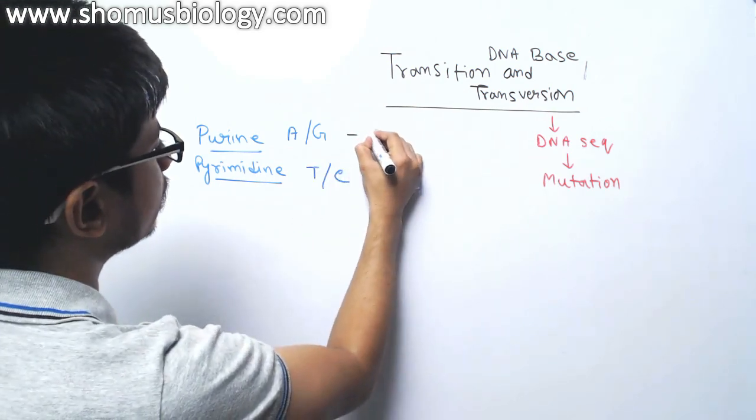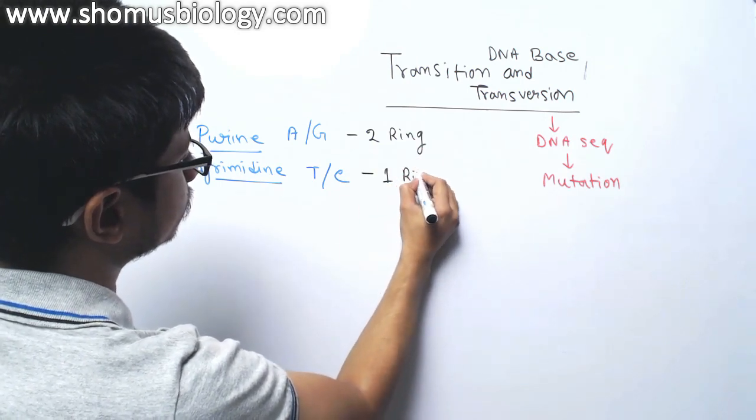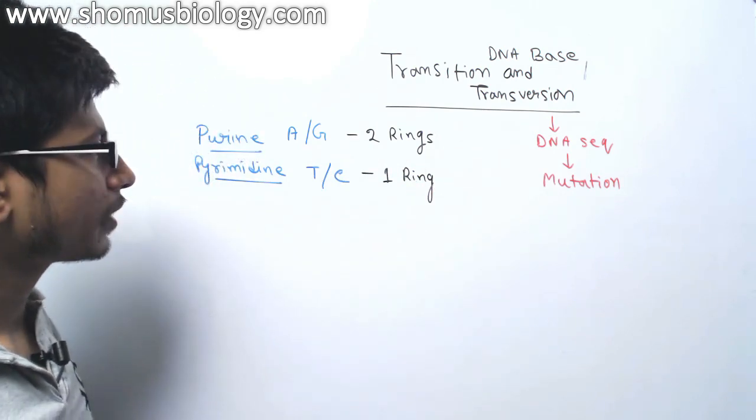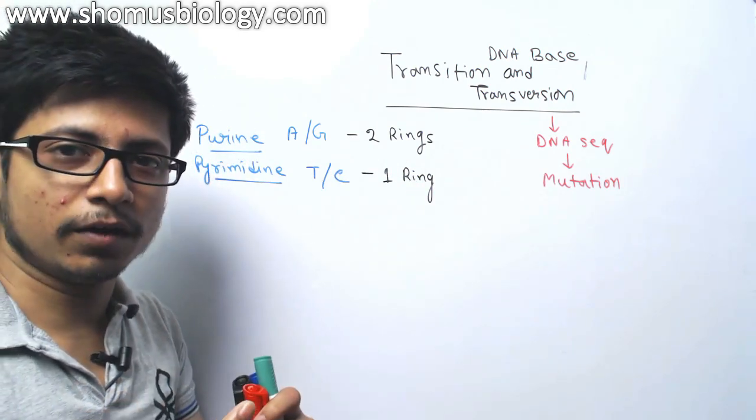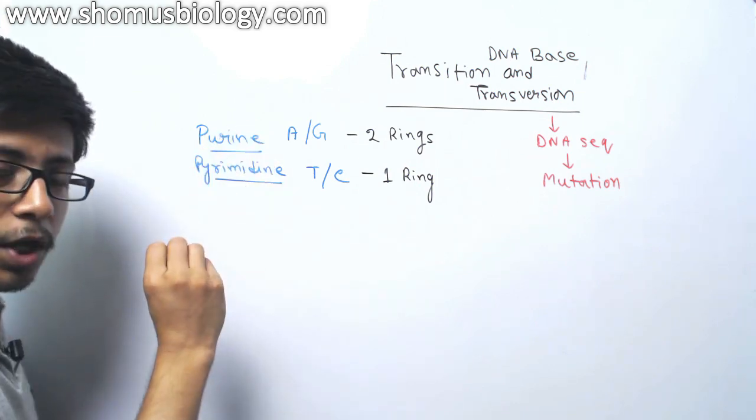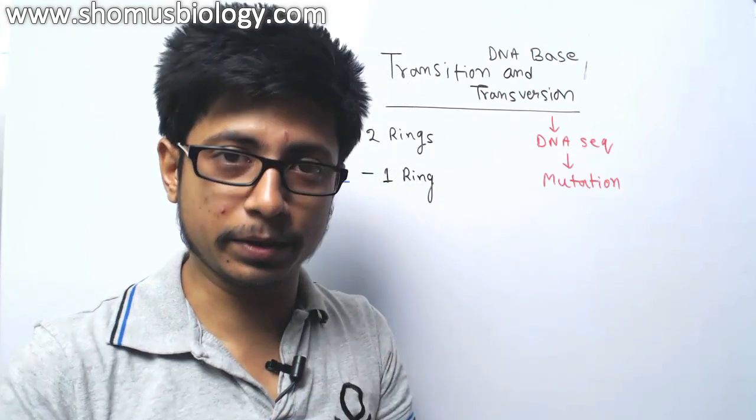This is containing two rings, it contains only one ring. The idea is we have a change of those purine to pyrimidine or pyrimidine to purine, or sometimes we have change between pyrimidine to pyrimidine and between purines.